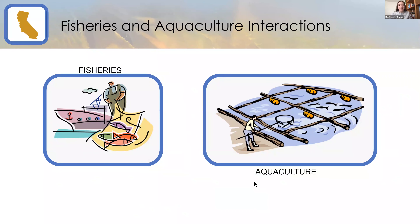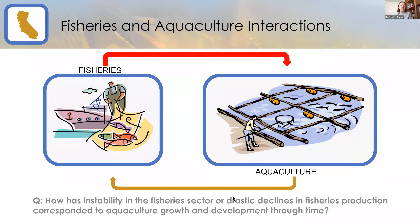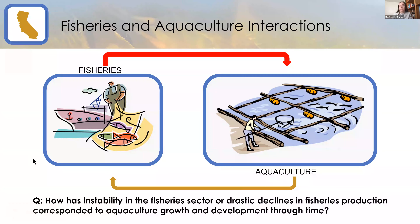Thank you, Holly. My name is May and I'm a graduate student in her lab. I'm going to talk about the California case study, which I've taken the lead on, to identify some of the interactions between aquaculture and fisheries on a finer scale. Specifically, I was interested in how changes in fisheries might be affecting the development or design of aquaculture within the state, and how instability in the fishery sector or drastic declines in fisheries production might correspond to aquaculture growth or development through time.